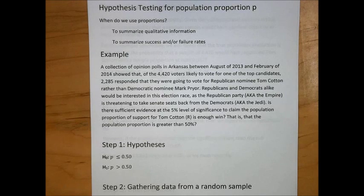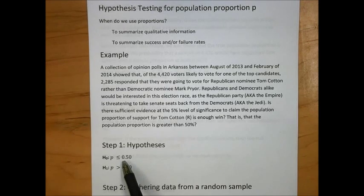Our first step of the hypothesis testing procedure is to identify the statistical hypotheses. In this case, we are asking if there was enough evidence that the population proportion of support for Tom Cotton is greater than 50%. Here we see the alternative hypothesis is that the population proportion P is greater than 0.5, or 50%. Thus, the null hypothesis, or the opposite hypothesis that we are trying to reject, is that the population proportion P is less than or equal to 50%.